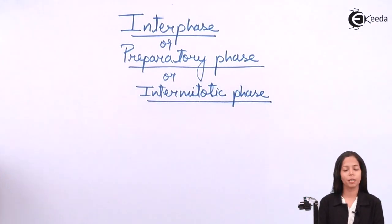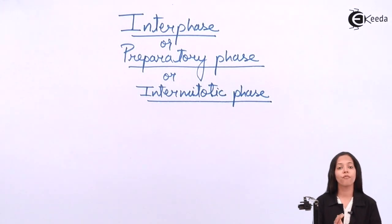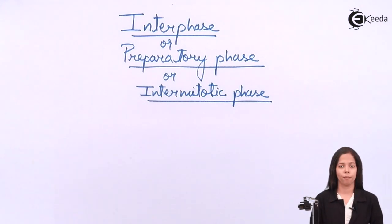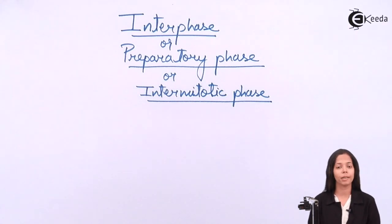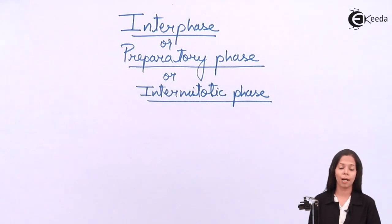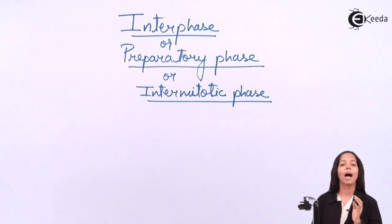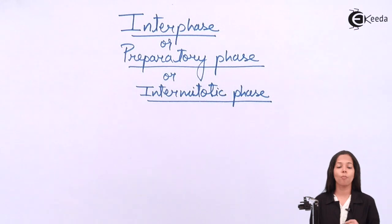Why is it called as preparatory phase? It is called preparatory phase because before the cell divides, the cell prepares itself. Why is it called intermitotic phase? It is called intermitotic phase because it occurs between two successive mitotic or M phases.